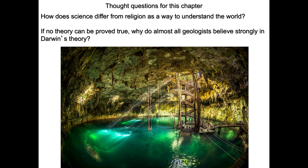If no theory can be proved true, why do almost all geologists believe strongly in Darwin's theory of evolution? It's because people don't know what the word theory really means. The idea initially was a hypothesis that became a theory — back in the 1850s and 1860s — and now it's pretty much a scientific model. It's accepted by scientists and by the general population for the most part as how plants and animals got to be the way they are today.